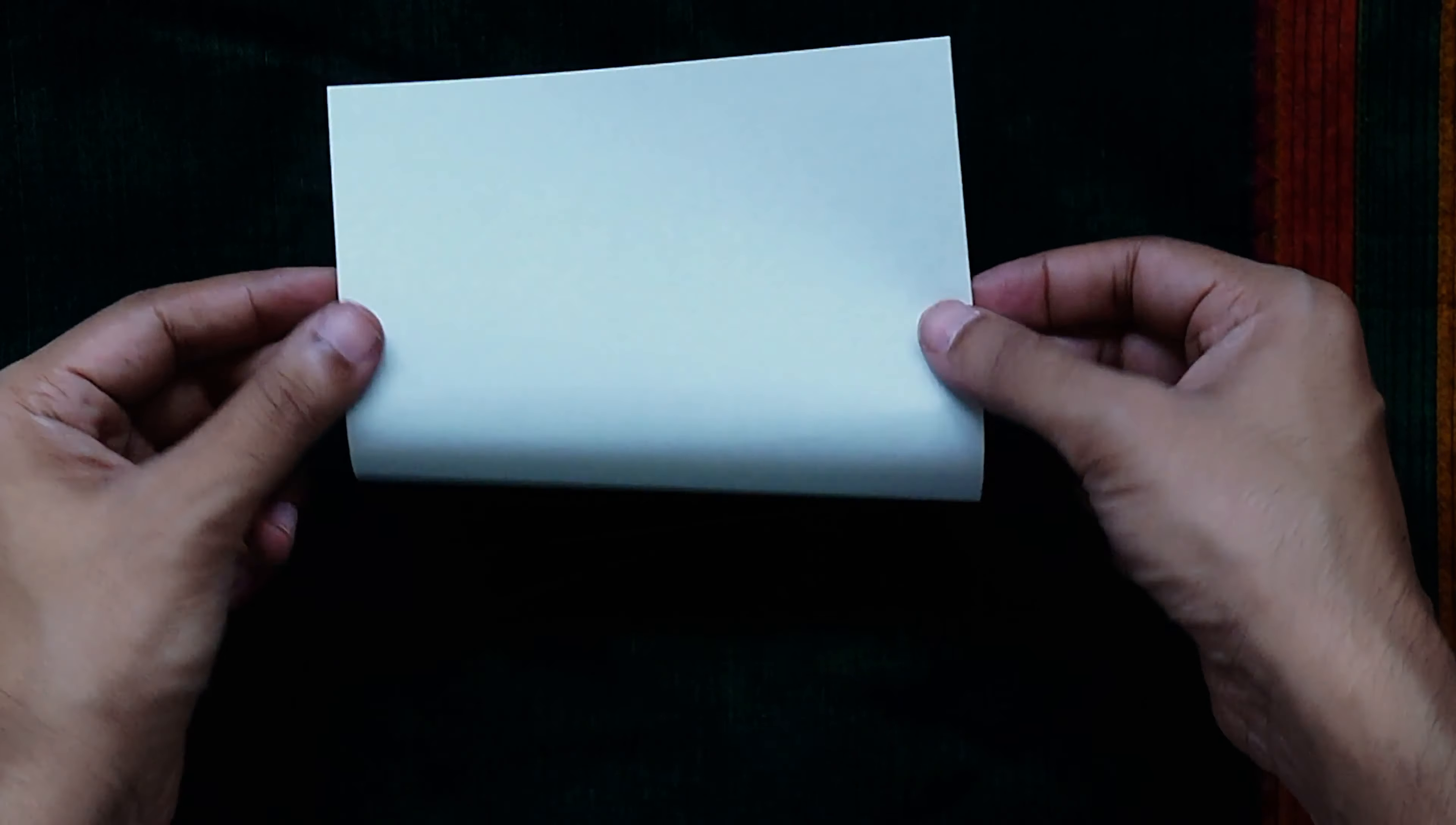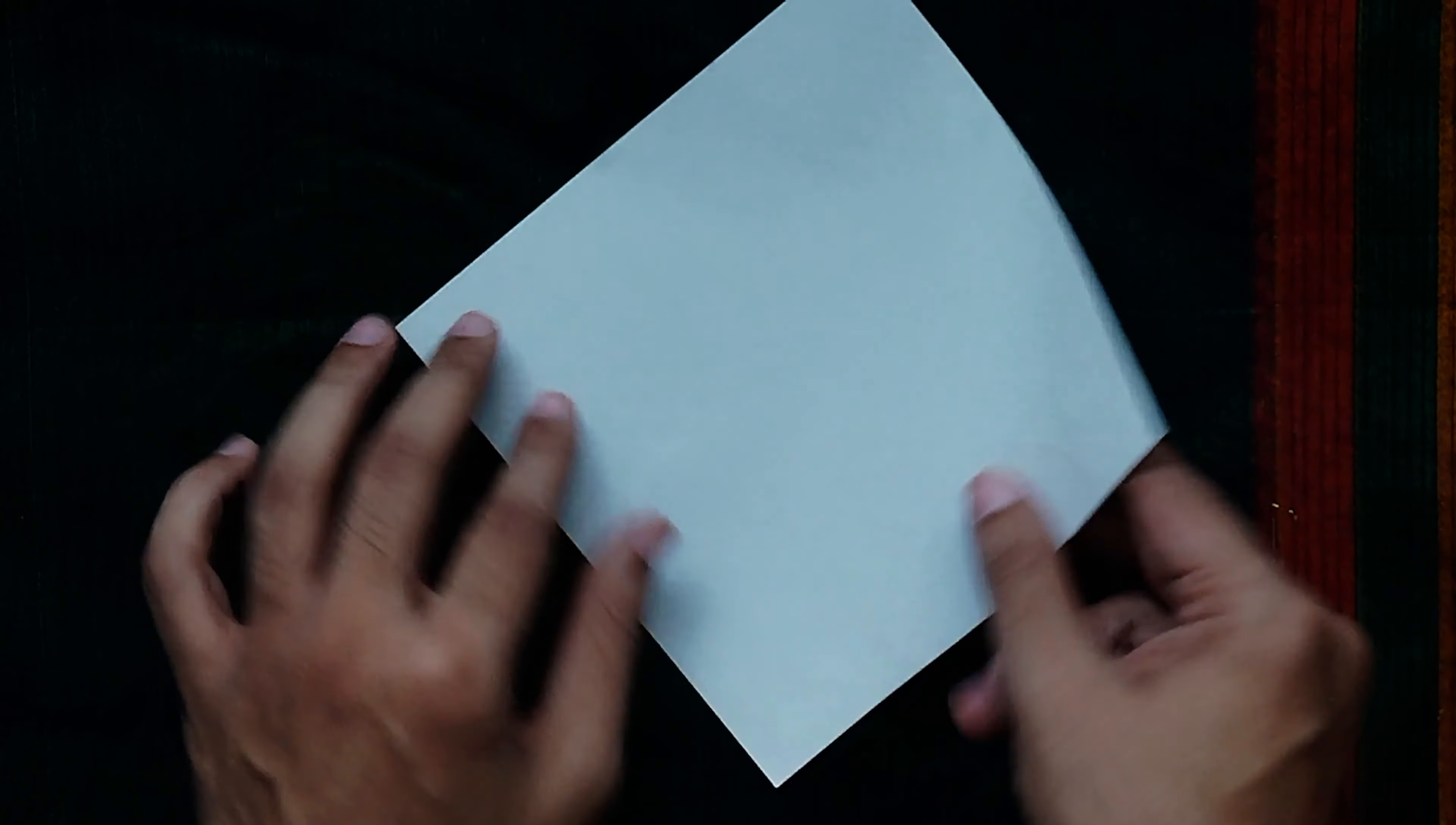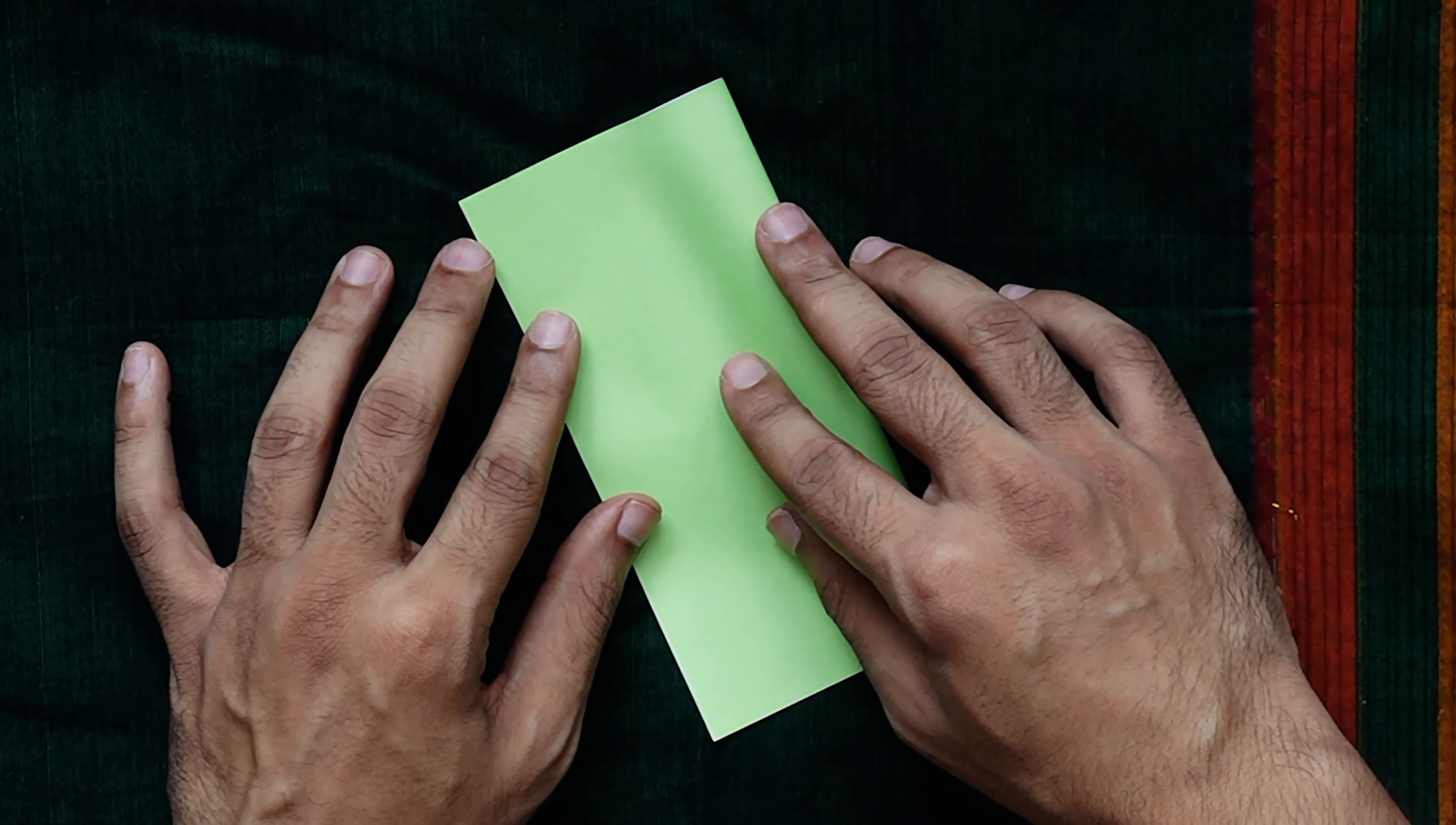Place a square origami sheet color side down and fold in half along the height and width to create this vertical and horizontal crease across the center of the square.